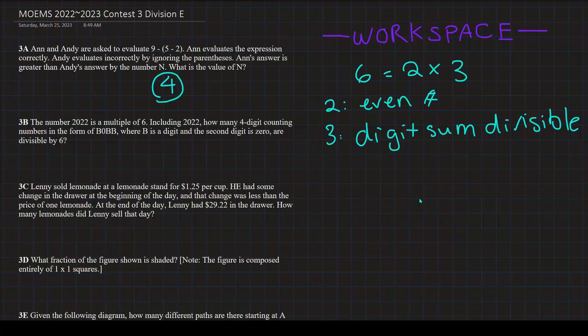That is the divisibility rules of 2 and 3. Now, if you're going to see if the number is divisible by 6, it just has to meet both of these requirements. Now, you can ask yourselves, how many 4-digit numbers in the form of B0BB, so 3 of the same digits, and 1, 0, meet both of these requirements?